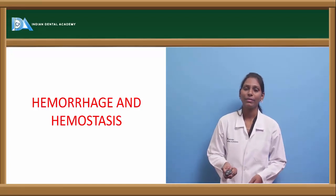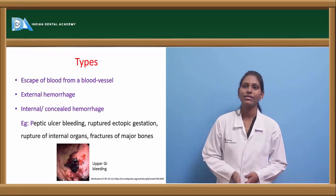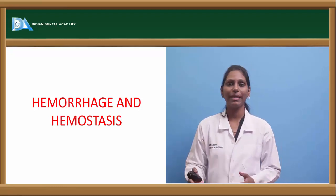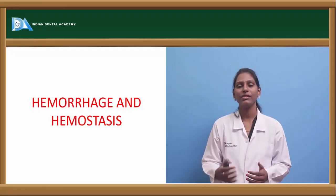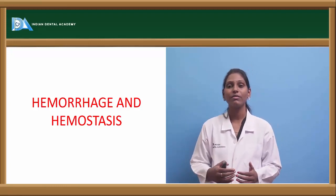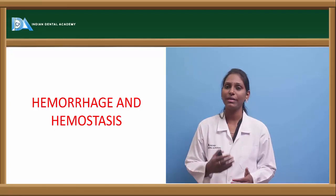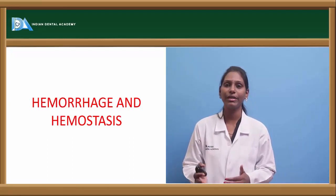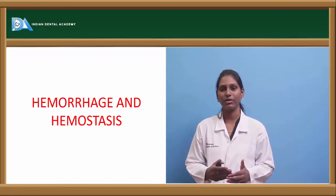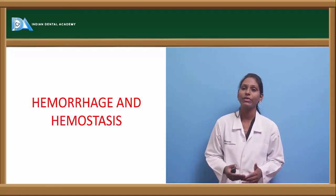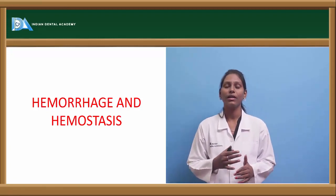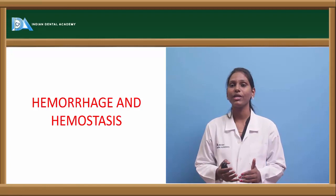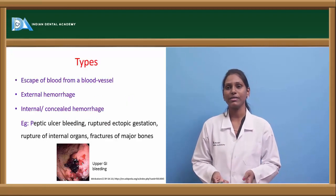Today the topic is about hemorrhage and hemostasis. Hemorrhage is nothing but blood loss. In general surgery, it is mostly encountered with cases of blood loss, which can be either acute blood loss or chronic blood loss. Today we will discuss types of hemorrhages, their clinical features, and how we actually manage hemorrhage and the protocols of hemostasis.